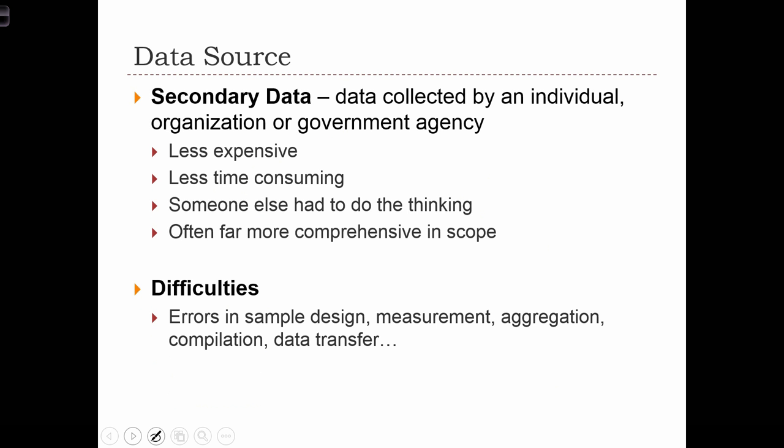Now, secondary data, we are going to consider all data collected by individuals, organizations, or government agencies, but not you. So any data that was collected by someone else and then given to you for your use is going to be considered secondary data. Secondary data has a lot of advantages. It's less expensive. In the United States, many data sets just come free. We have more and more an attitude that data should be free unless it's being used for commercial purposes or businesses are trying to make money from their data, then it's often not free. But, for example, all the data that the government collects is freely available.